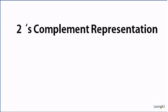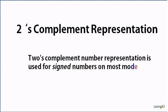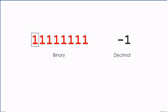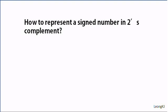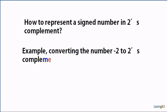Two's complement representation is used for signed numbers on most modern computers. Negative 1 is represented by 11111111, and negative 2 is represented by 11111110. How do we represent a signed number in two's complement? Let's see how to represent negative 2.